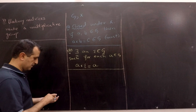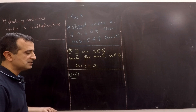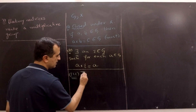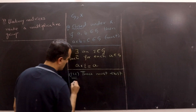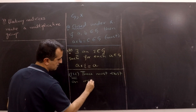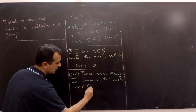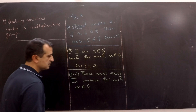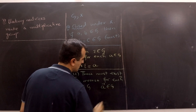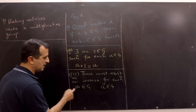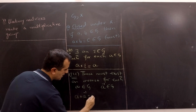The third property of the multiplicative group states that there must exist an inverse for every element of the group. For each element A, a member of G, assume there exists an element A-inverse, also a member of G. A-inverse is the inverse of element A, and A times A-inverse equals the identity.